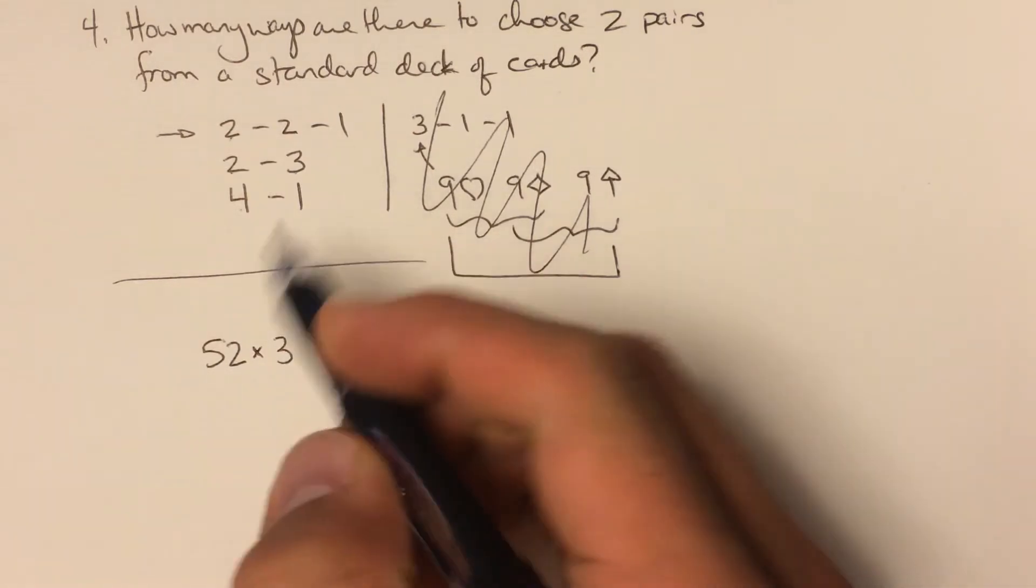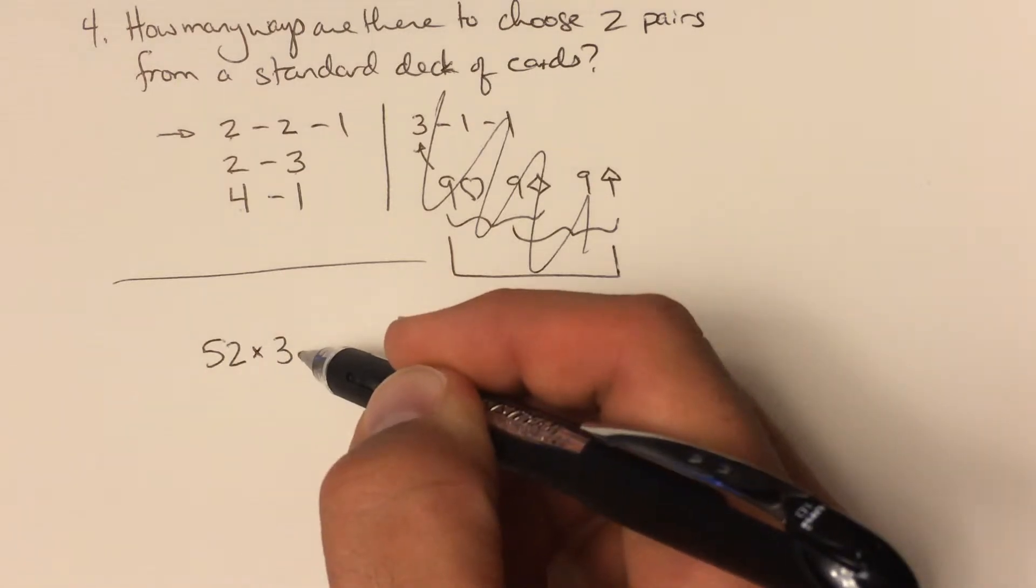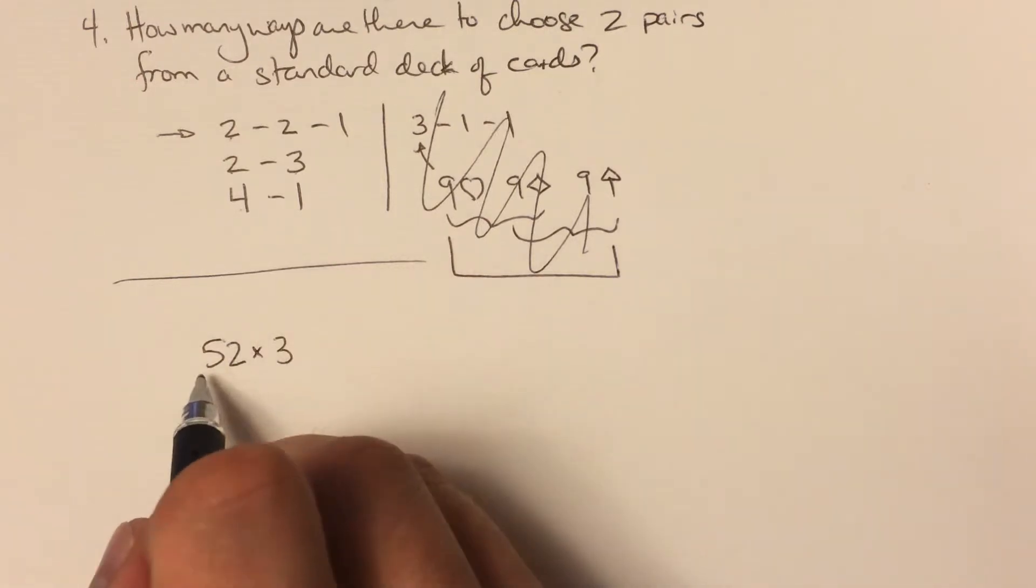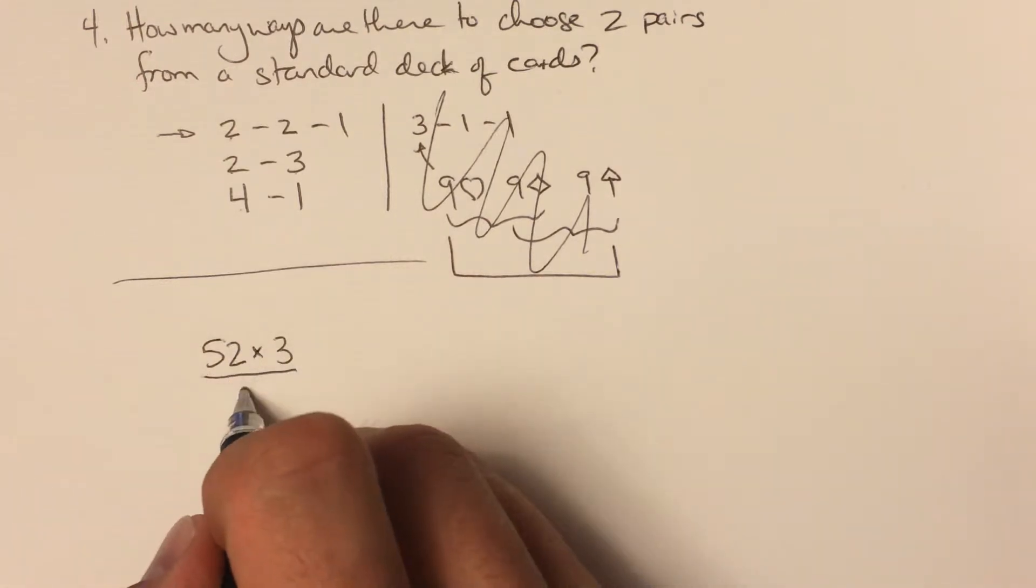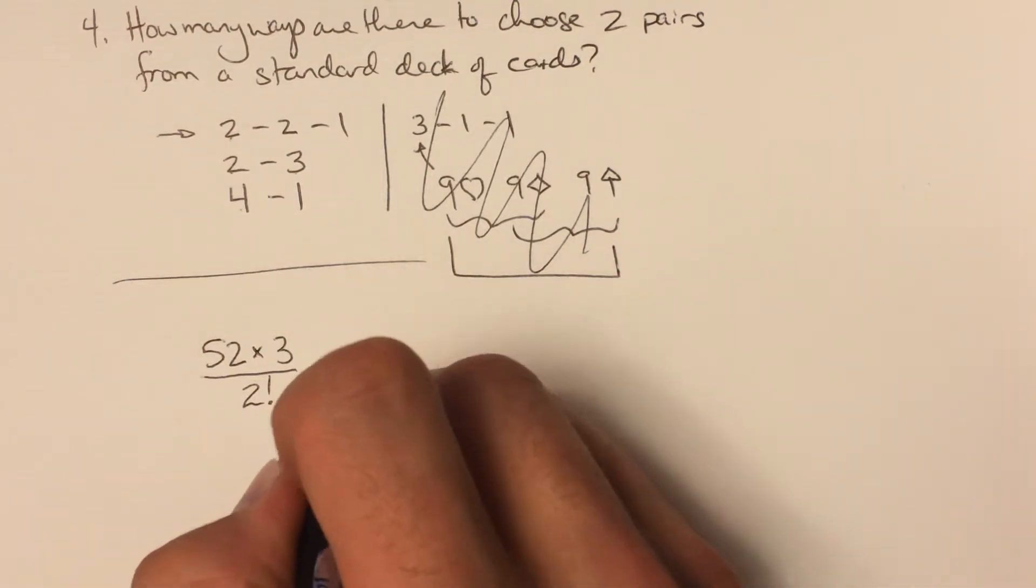This is any choice of any card, 52 of them, and then one of the other three cards that will make a pair, which is a different suit. But of course I could choose those in two different orders, or two factorial different orders, because there are two cards there.